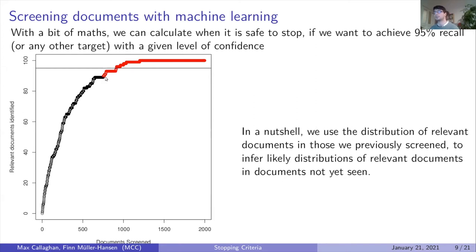What we need to do is calculate using a bit of math when it is actually safe to stop. We do that by using information about the documents we've already screened to infer something about the distribution of relevant documents in the documents that are yet to be screened.